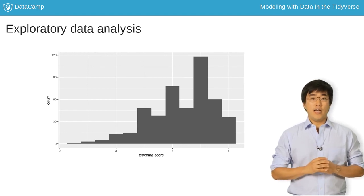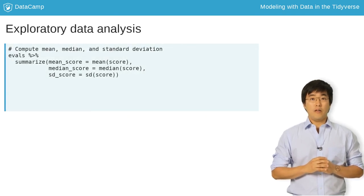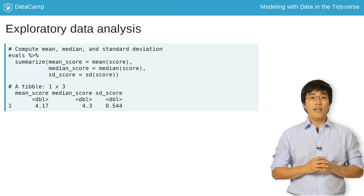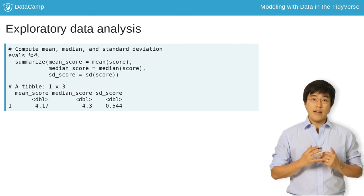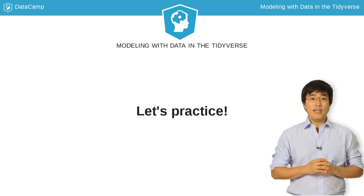Let's perform the third step in our EDA, computing summary statistics. Summary statistics summarize many values with a single value called a statistic. Let's compute three such summary statistics using the summarize function. The mean, or average score is 4.17, whereas the median of 4.3 indicates about half the instructors had scores below 4.3 and about half above. The standard deviation, a measure of spread and variation, is 0.544. In our first exercise, you'll be performing an EDA on a different numerical variable, this time instructor age.